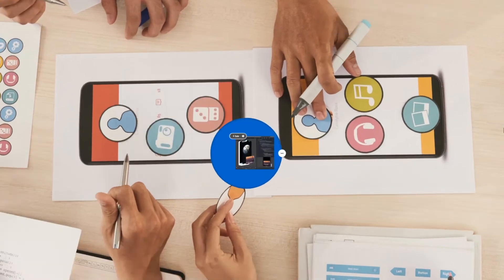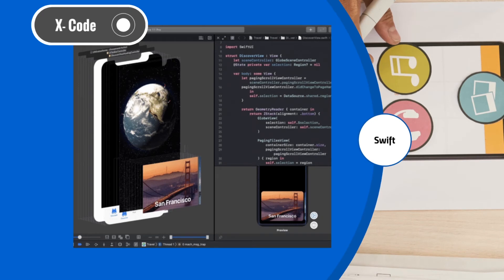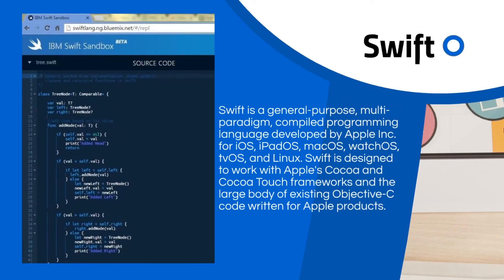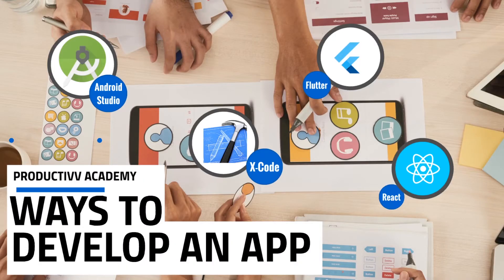The next framework is Xcode, which was developed by Apple — similar to how Android Studio was developed by Google. It has a similar interface to Android Studio, but to run Xcode you need an Apple computer; it will not run on a Windows machine. The programming language used in Xcode is Swift, developed by Apple and designed to work with Apple's Cocoa and Touch frameworks. Swift can only be used for iOS and cannot be used on Windows or in Android Studio.